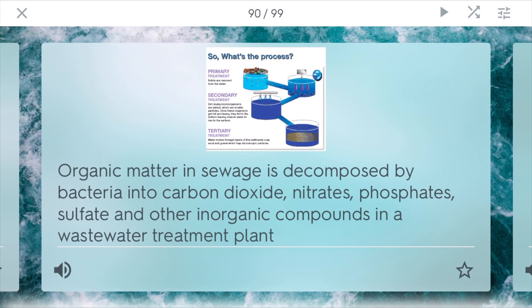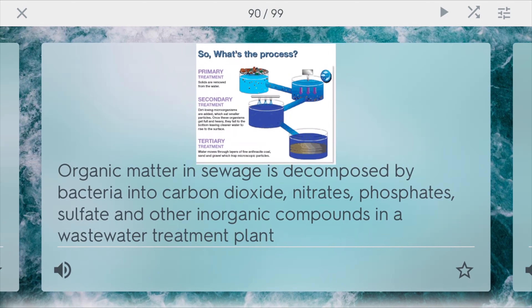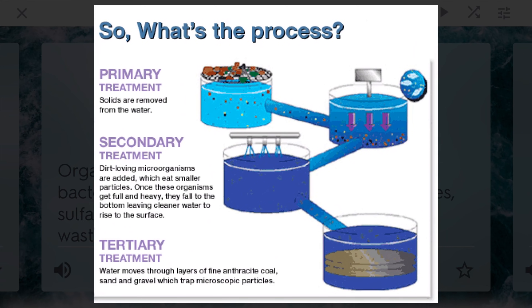Sewage treatment is a process many municipalities have where organic matter and sewage is decomposed by bacteria into carbon dioxide, nitrates, phosphates, and sulfates — which can be turned into fertilizer — and other inorganic compounds in a wastewater treatment plant. There are mainly three steps: primary treatment removes all the solids through physical filtration; secondary treatment uses microorganisms that eat the waste, and these organisms fall to the bottom leaving clean water on top; and tertiary treatment cleans the water through ozone, chlorine, and other purification processes before it goes back into the environment.